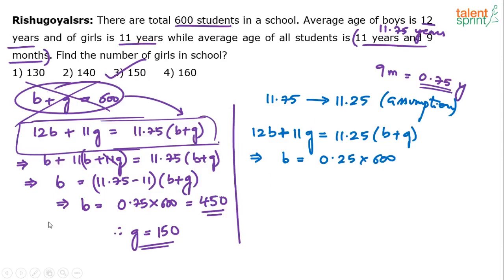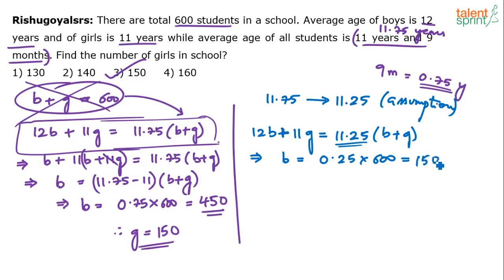If you cut down the steps, these are the only steps to put on paper. The average of the whole class is 11.25, and 0.25 times 600 is 150. So the number of boys is 150, which means the number of girls is 600 minus 150, which is 450. In this case, the number of girls is 450.